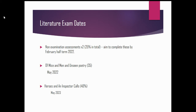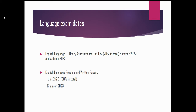For your Language exam dates: the individual Oracy would take place in the summer term of Year 10, and the group Oracy would take place in the autumn of Year 11. Units 2 and 3 — the Reading and Writing papers — will take place at the end of Year 11, in 2023.